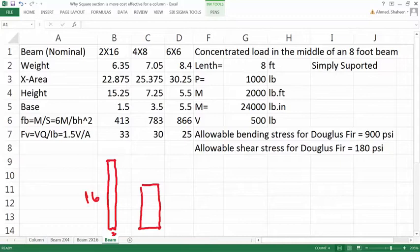And 6x6 would be somewhat like this. So this is a 6x6, this is a 4x8 and like that. Now you can see that I have calculated this bending stress here.